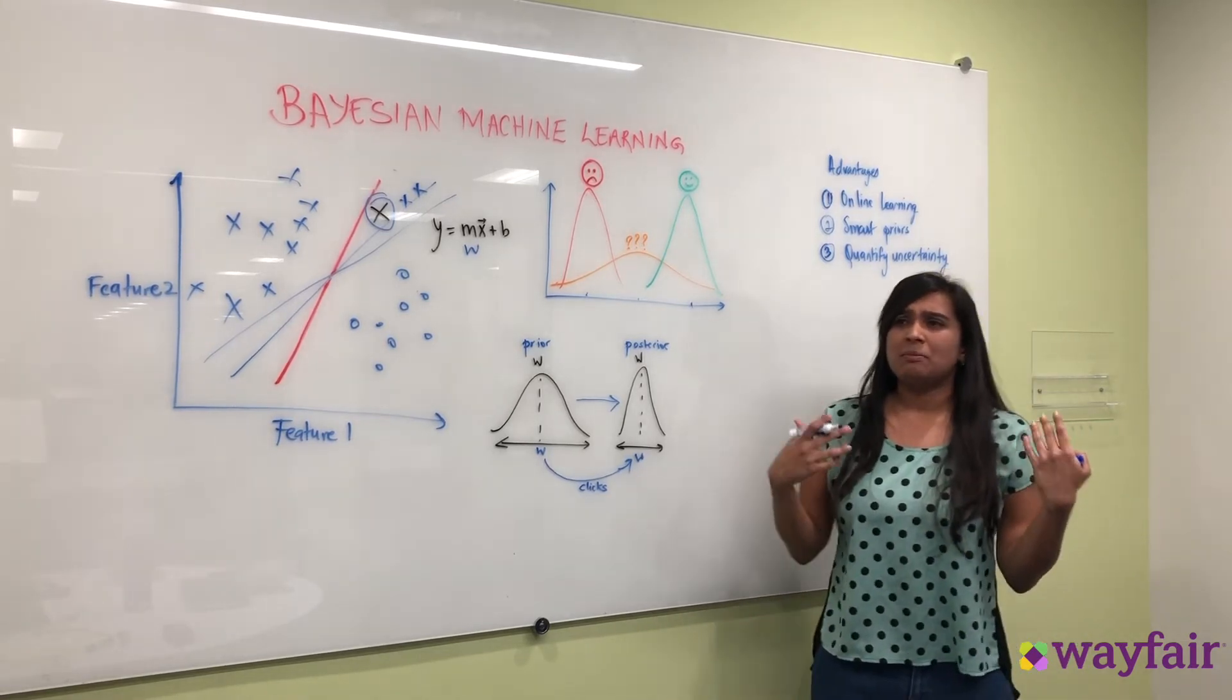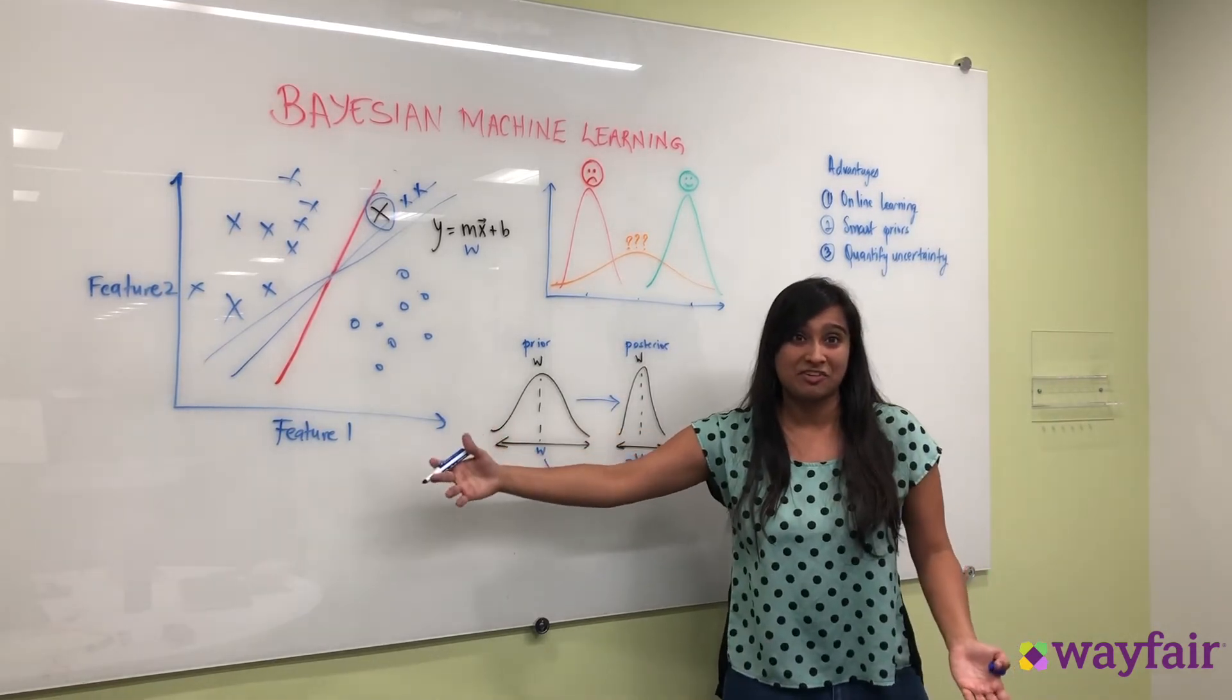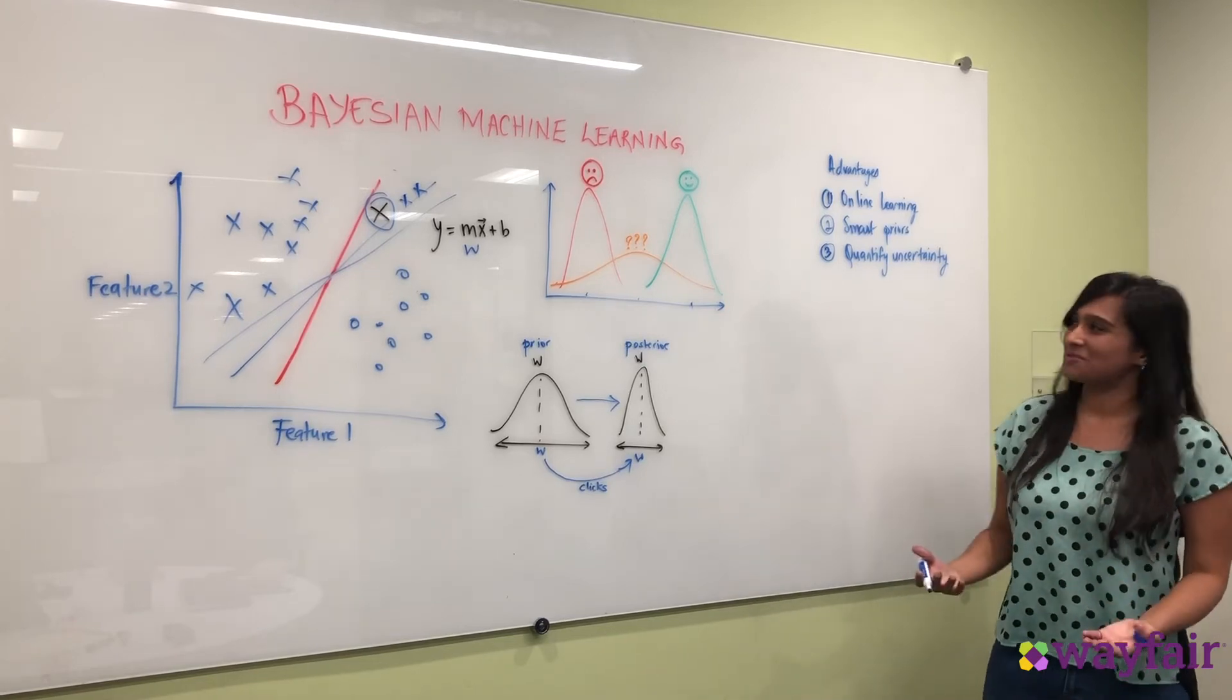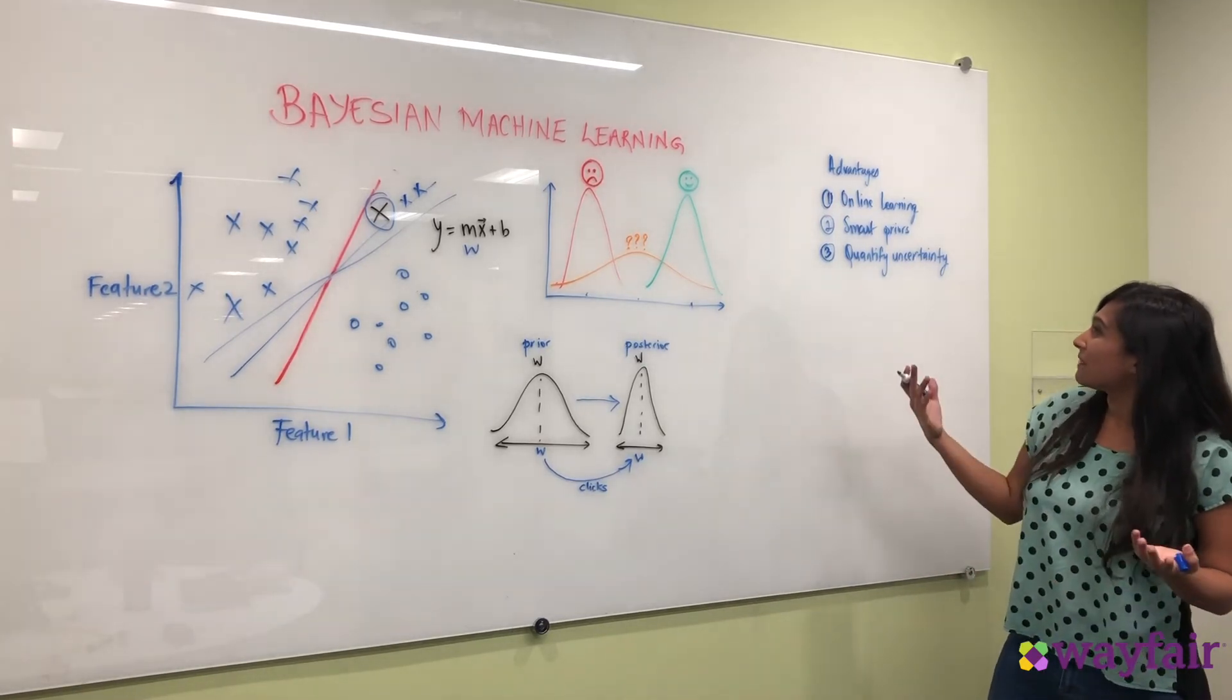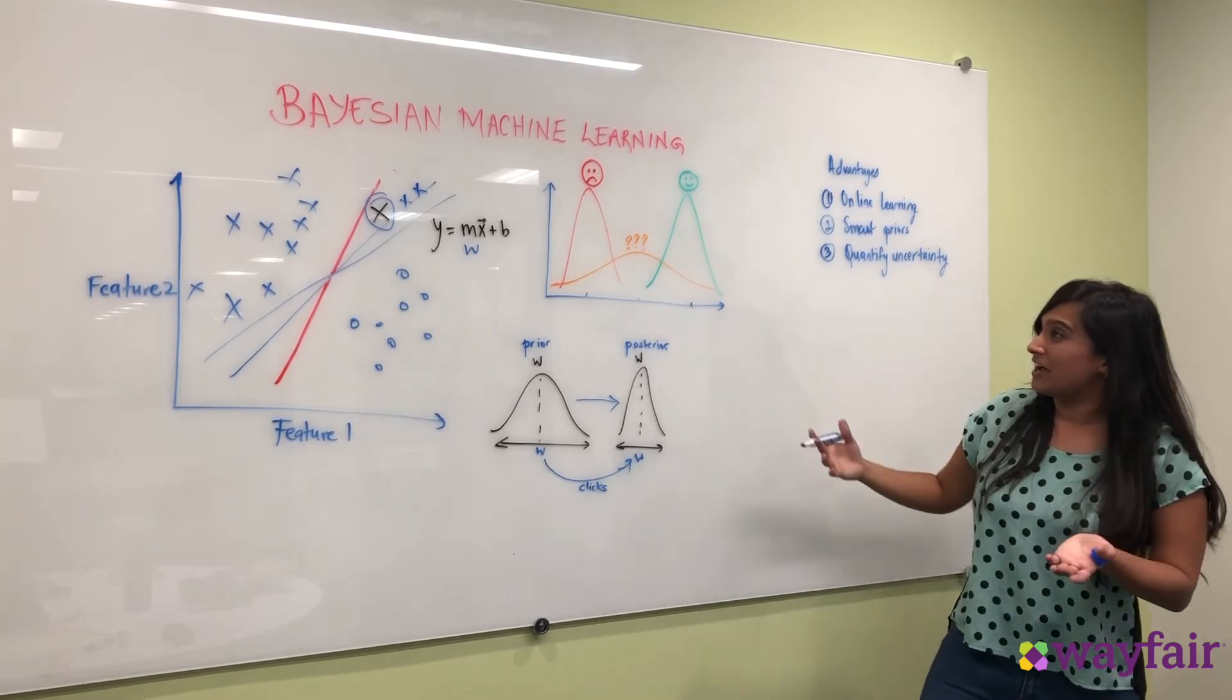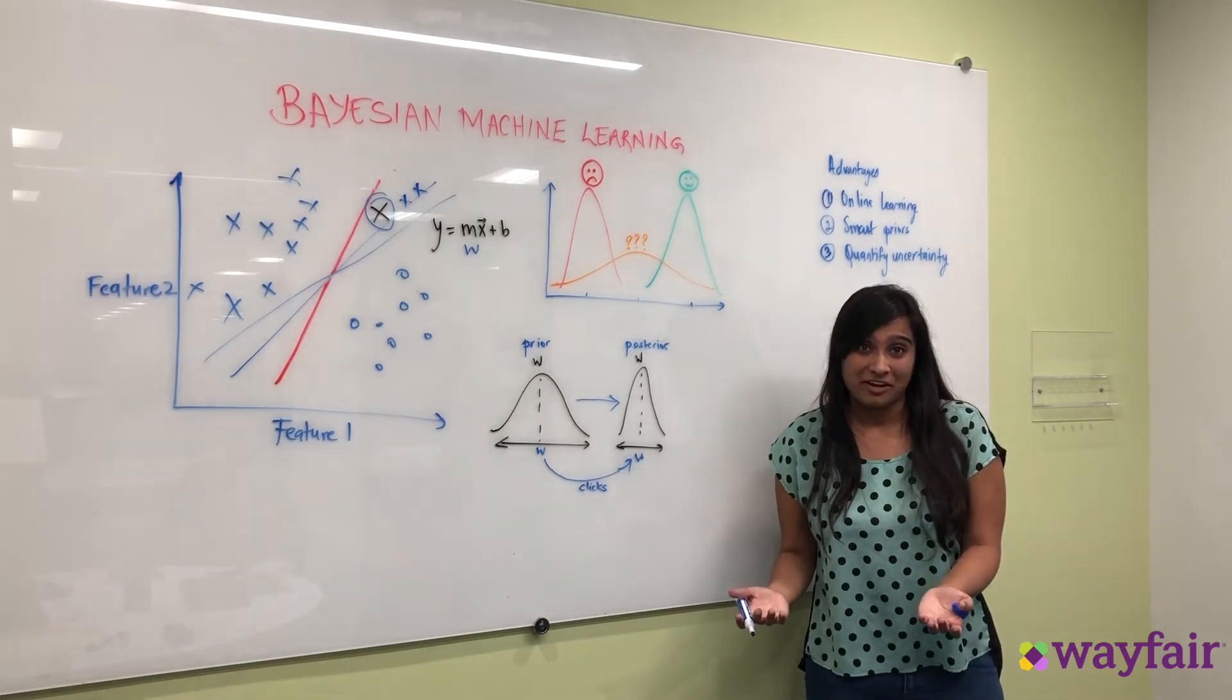And so when times change, when seasons change, when people's preferences change we know to boost feature one in our Bayesian machine framework and that will automatically give us a sort that learns constantly on users preferences. And so Bayesian machine learning has so many advantages that we need specifically in a production environment at Wayfair.